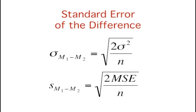Notice also that MSE, which is the average of the sample variances, is used in place of the variance of the populations.